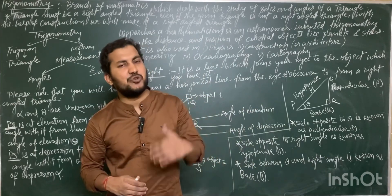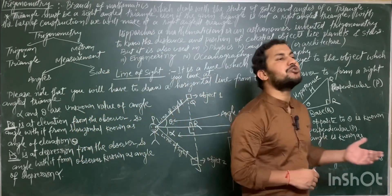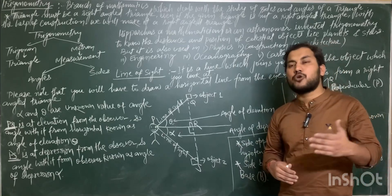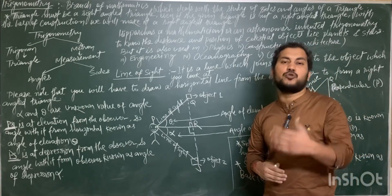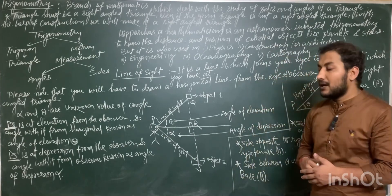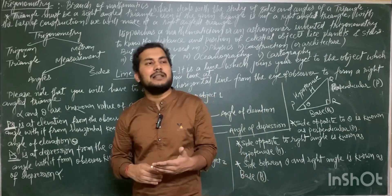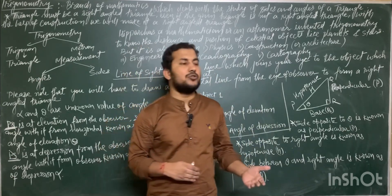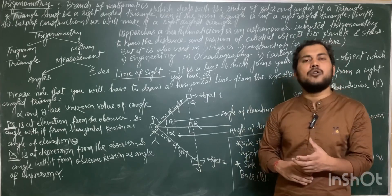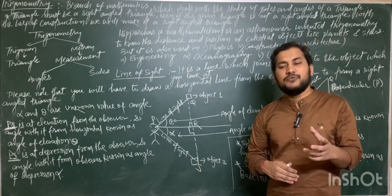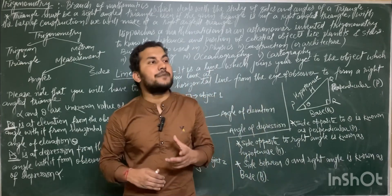In physics and engineering, trigonometry is used everywhere — in concepts, in derivations, everywhere it has been used. In construction, engineers also use trigonometry to design buildings and the structures they want to make. Before moving to the next part, which is related to angle of elevation and angle of depression, firstly we will study about a term called line of sight.